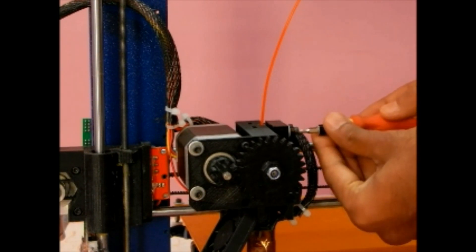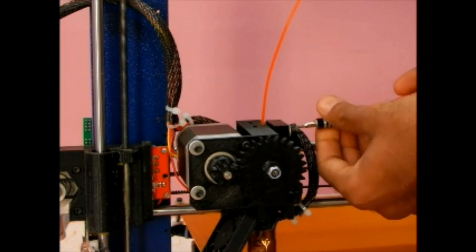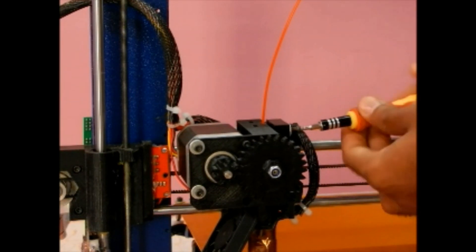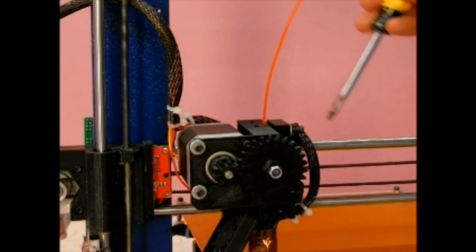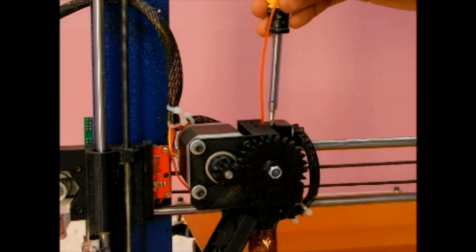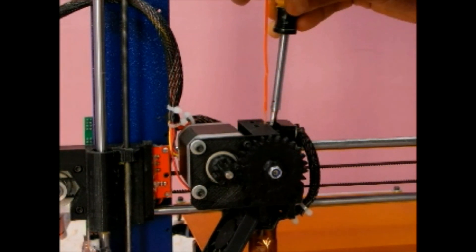Now, remove the filament from extruder to avoid wastage of filament during calibration. To do this, set the temperature of extruder nozzle to 190 degrees Celsius in Pronterface or Repetier Host and pull the filament straight upwards until it comes out completely.